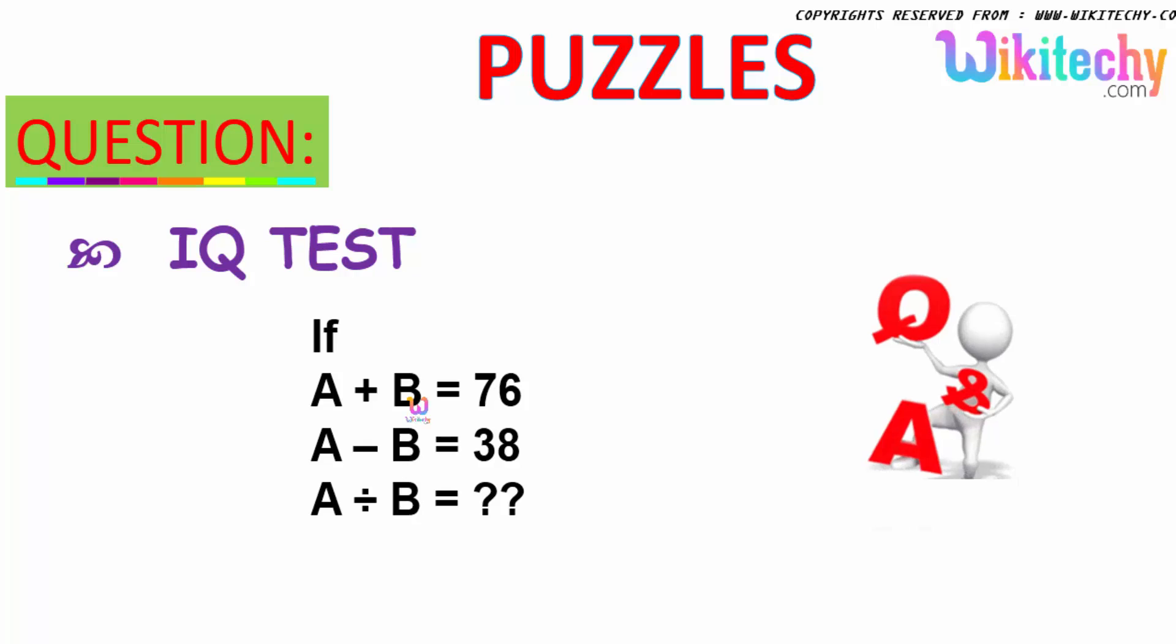If A plus B is equal to 76 and A minus B is equal to 38, what could be A divided by B? This is the question.